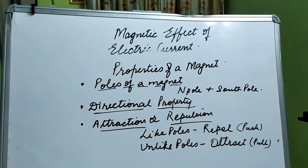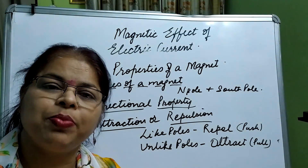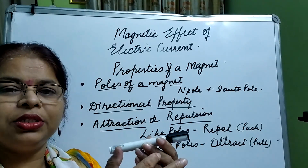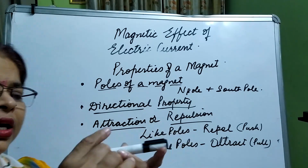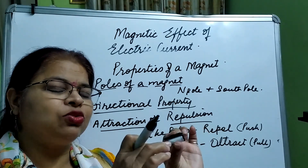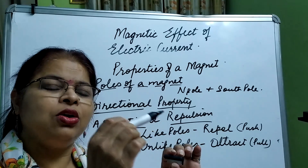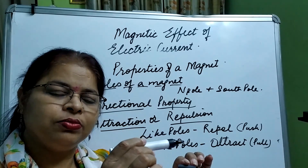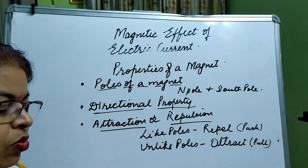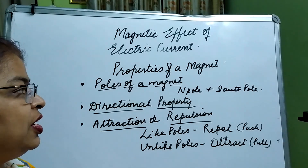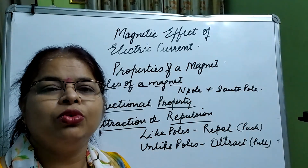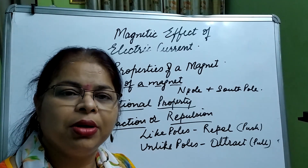Another important property is that magnetic poles always exist in pairs. For example, if a magnet breaks into two pieces, each piece will have its own north pole and south pole. So you can never isolate a single pole. This was all about the magnet — its properties and an introduction to the chapter. We will discuss more topics related to magnets and electricity in upcoming videos.